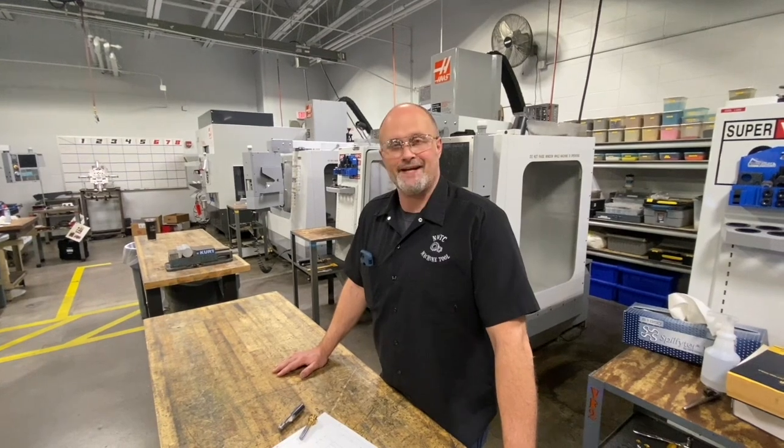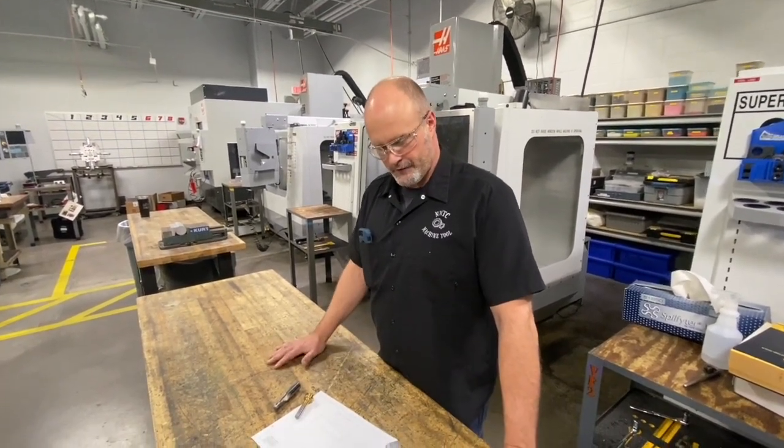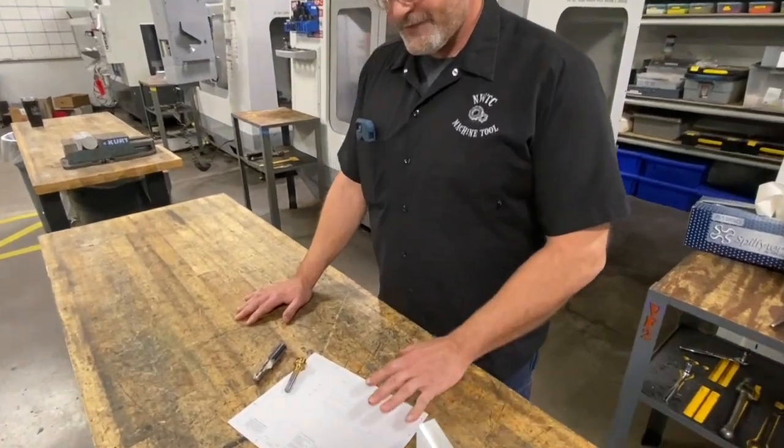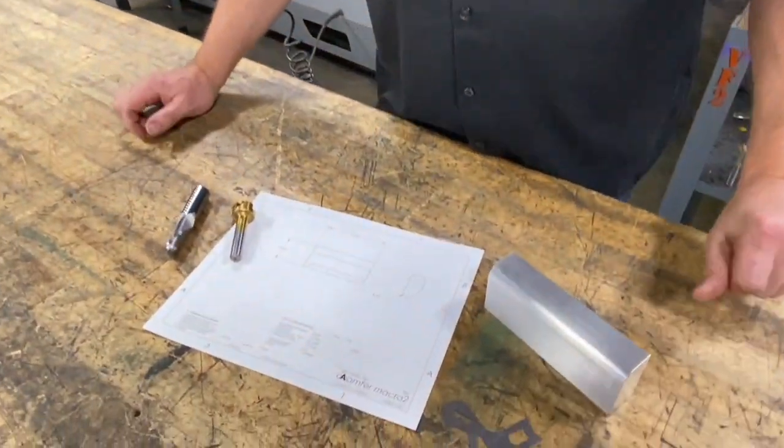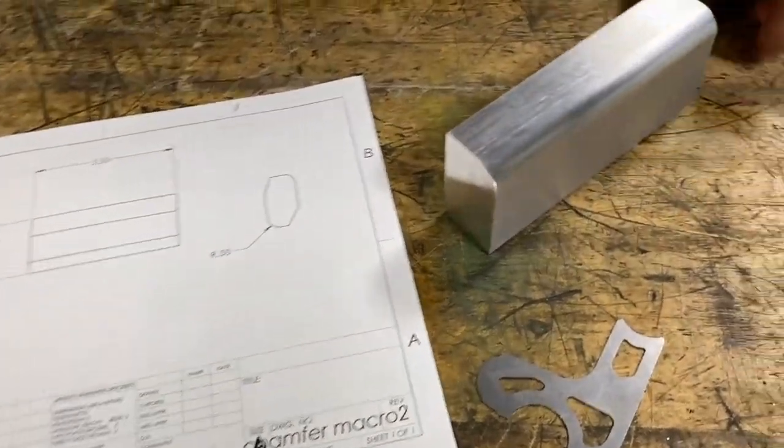Today we're looking at some programming techniques which involves cutting radiuses on a corner of a part. I got a couple of examples here and what we're going to look at today. This is just a little project that the students work on, programming techniques to produce a corner radius on this part.